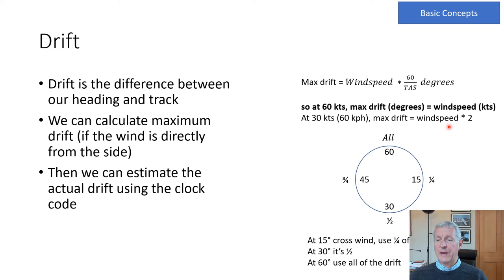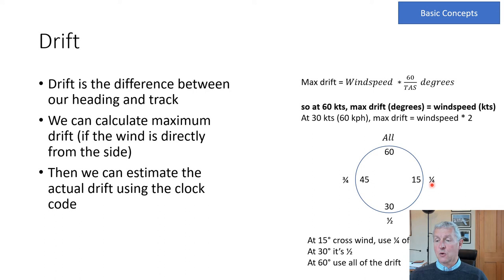To find how much drift to allow for a given leg, we use a clock code. Think of a clock face with positions at 15, 30, 45, and 60 minutes. If the wind is 15 degrees off the nose, take a quarter of the maximum drift; at 30 degrees, take half; at 45 degrees, three-quarters; and if the wind is 60 degrees or more off the nose, use all of the maximum drift. This rule is also useful when estimating crosswind on landing.